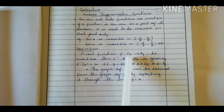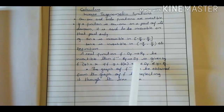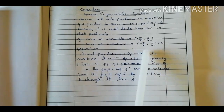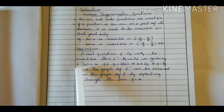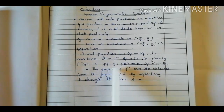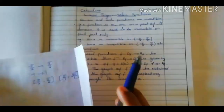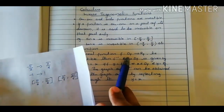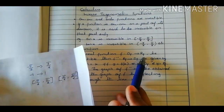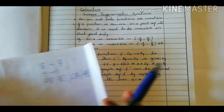We consider values from domain of f as x, and values from range of f as y. That is why f inverse of y equals x if and only if y equals f of x. We said x is one value from domain of f and y is one value from range of f.